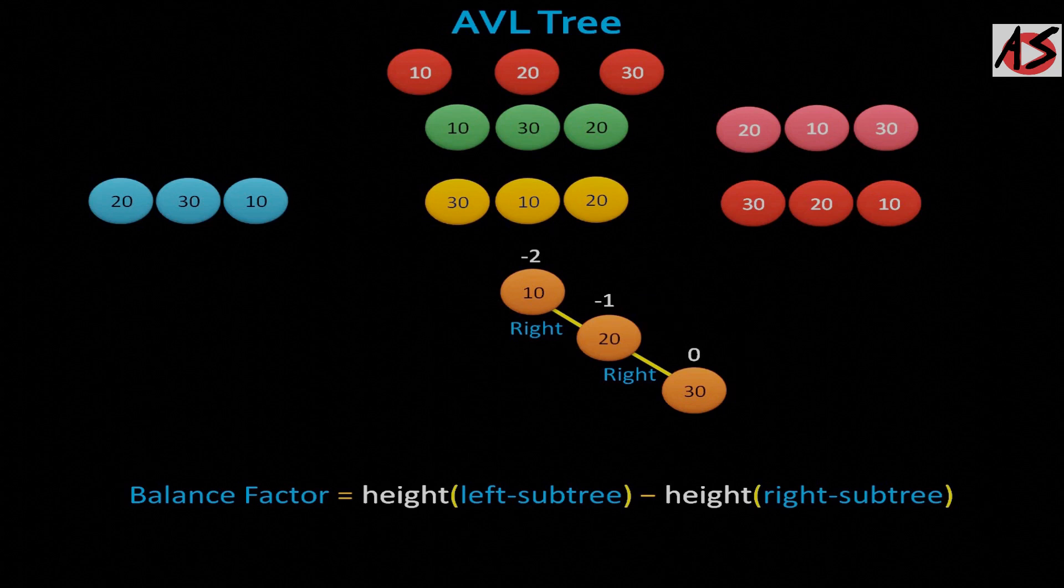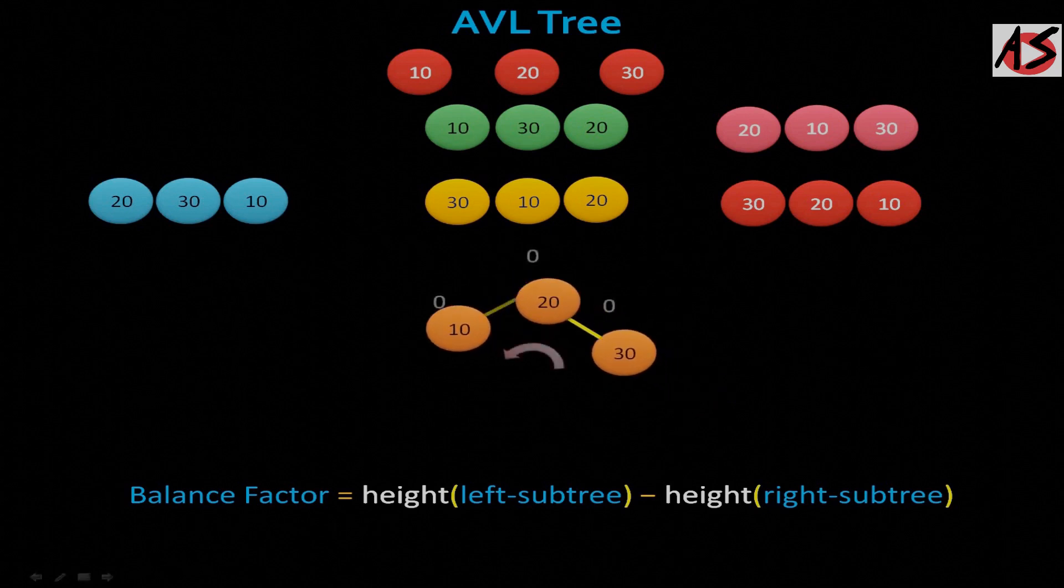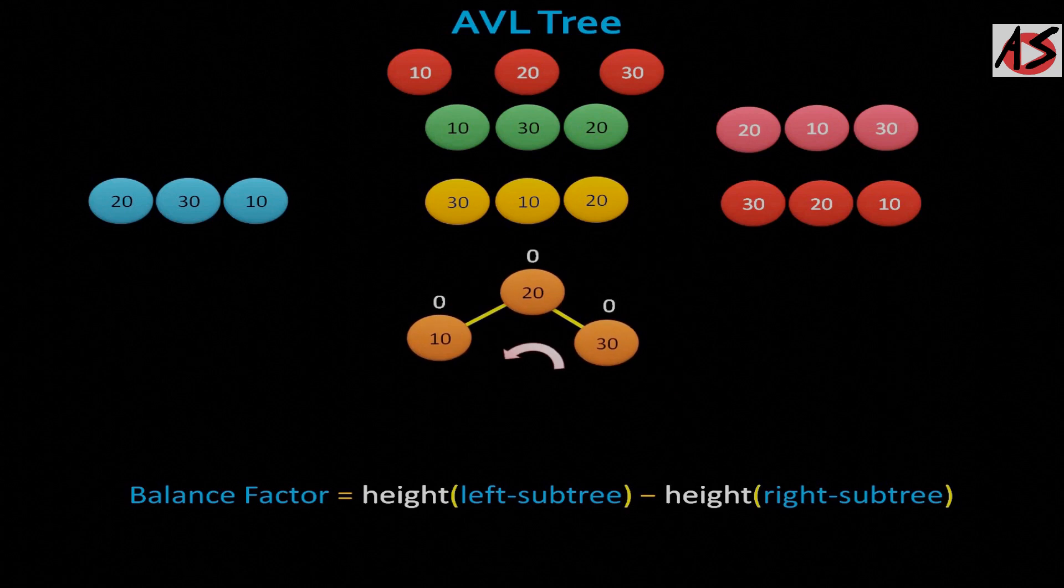Now for root node that is 10 here, left subtree height is 0 while right subtree height is 2. Therefore, balance factor 0 minus 2 equal to minus 2. That's not allowed in AVL tree. So we can perform left rotations on 10 to balance the tree.